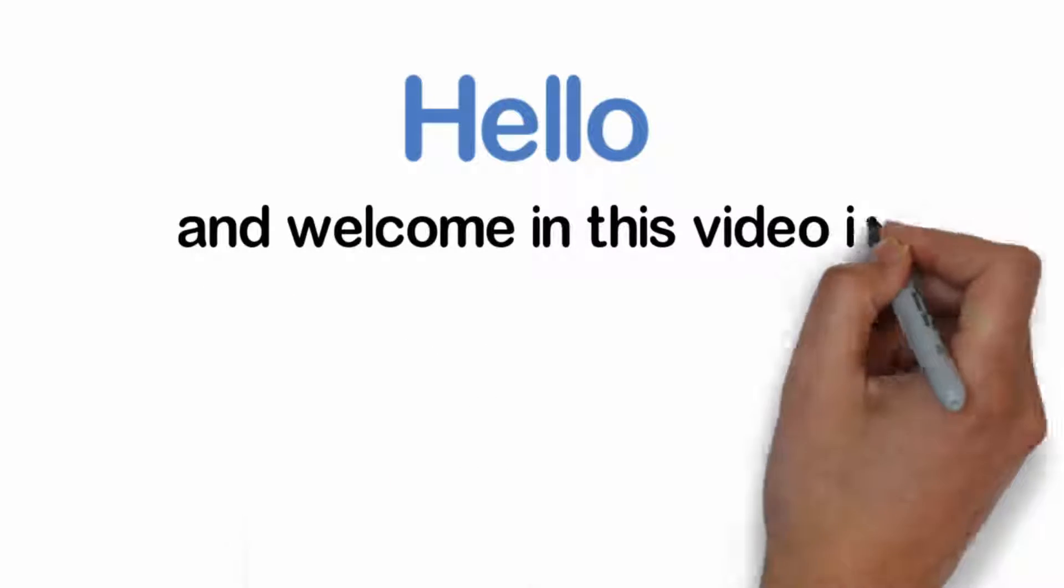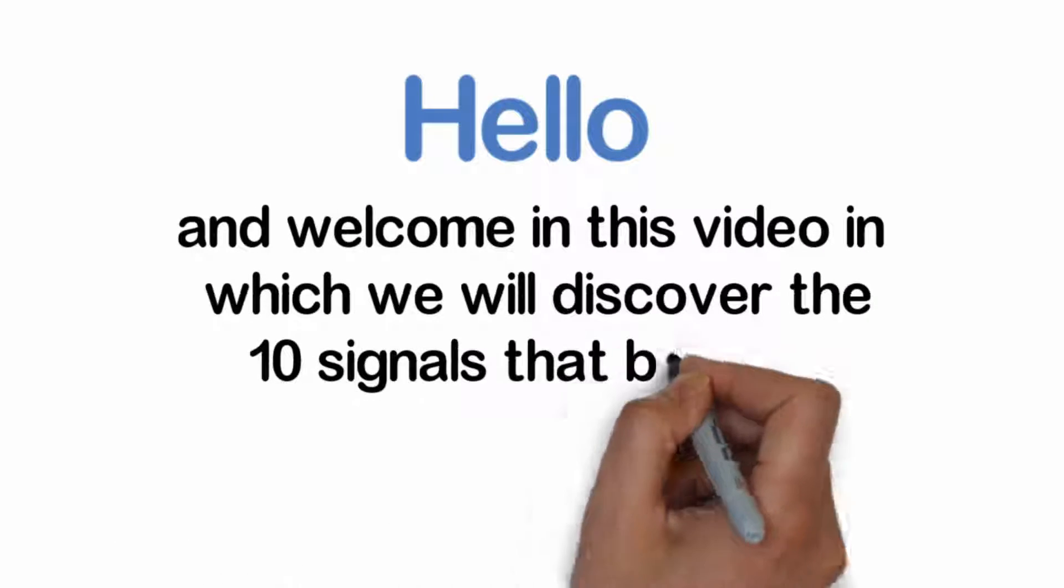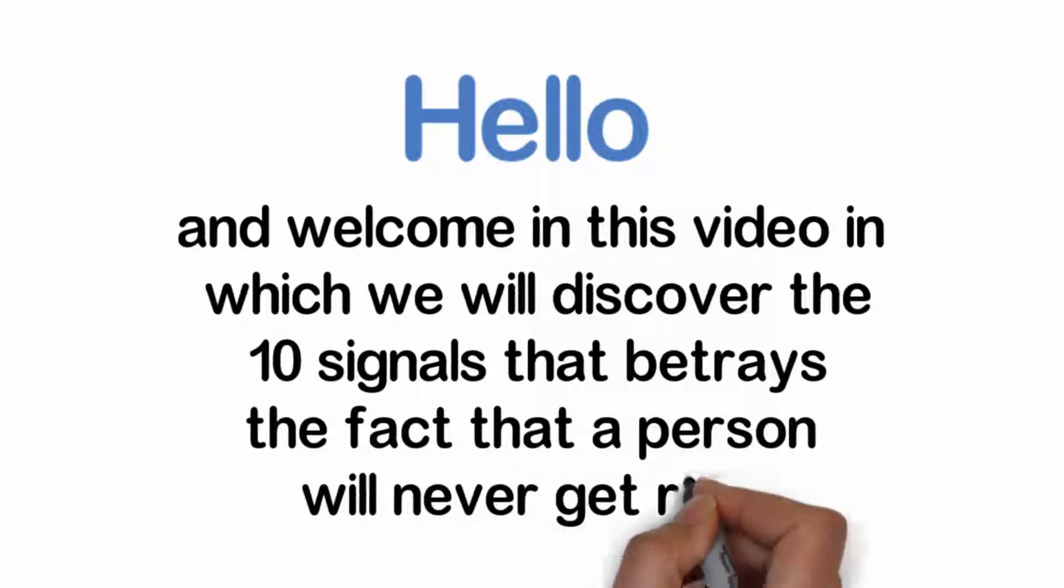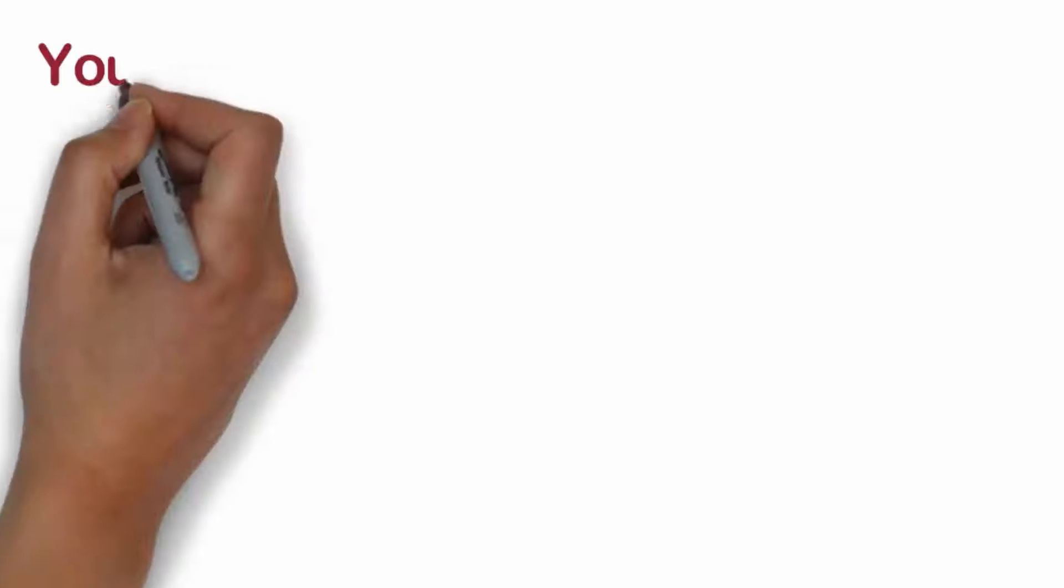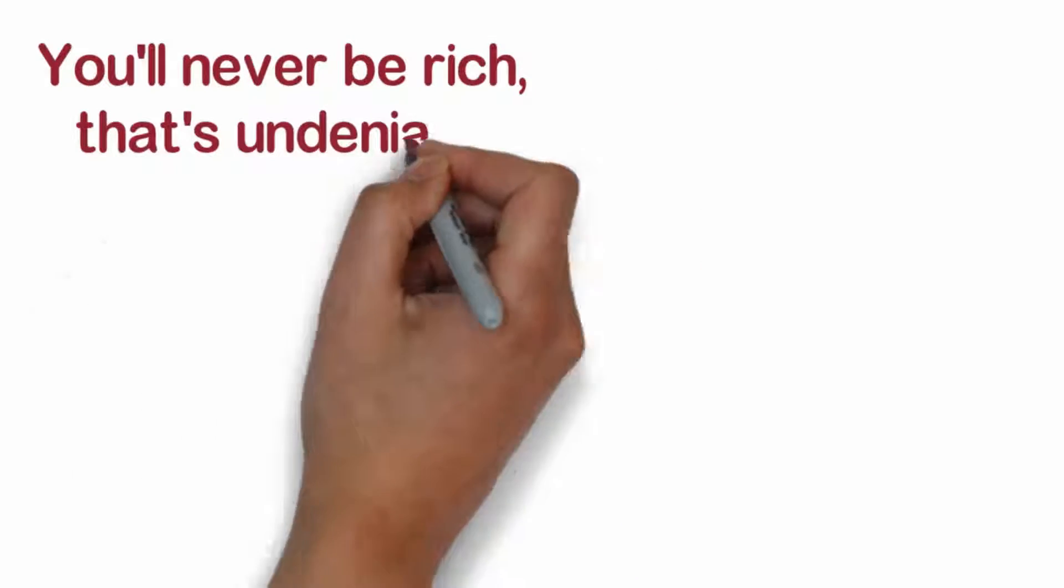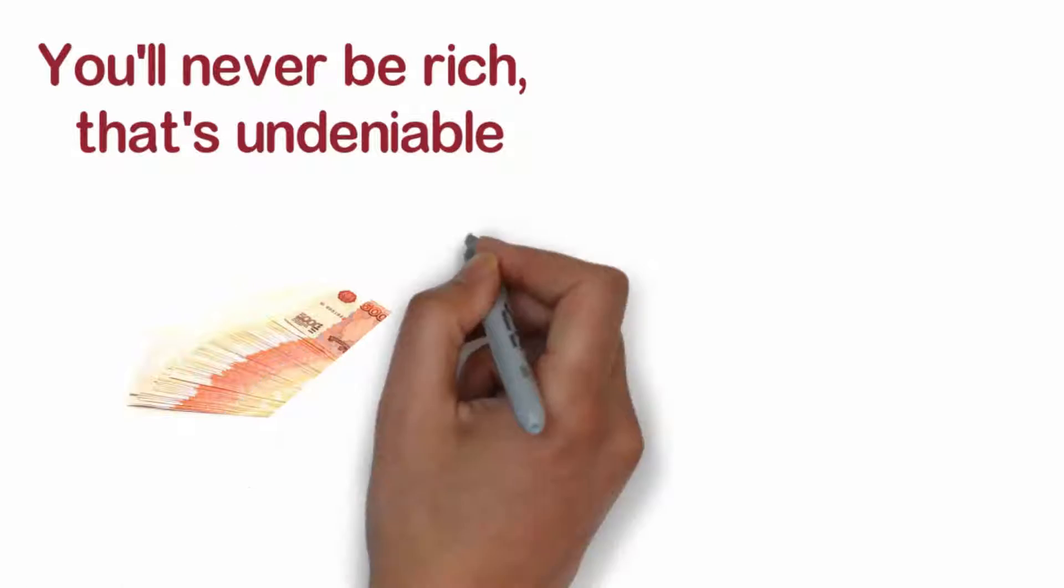Hello and welcome. In this video we will discover the 10 signs that betray the fact that a person will never get rich. You'll never be rich. That's undeniable. Does this sentence make you react? That's normal.